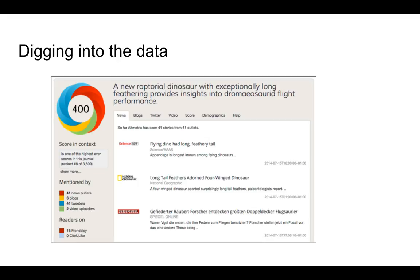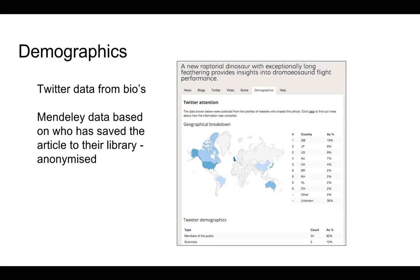We can start to see the news sites that have been covering it — Science Now, National Geographic, Der Spiegel in Germany. This is very useful in terms of knowing that the research you've done is actually getting out there and being communicated across the web beyond the university and the institution. We can also look at the demographics in altmetric.com, drilling down to see the percentage of tweets and blogs, with Twitter being the prominent form of communication for research on the social web.